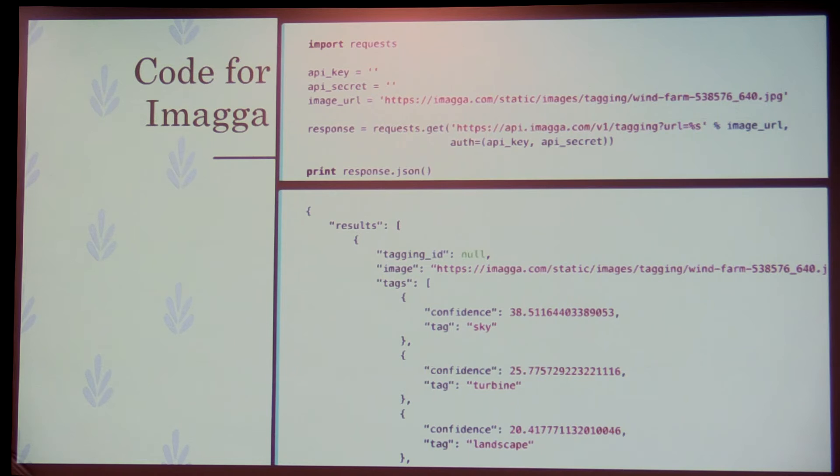The third API is very similar. These guys don't have a library as such — you use requests and just do requests.get, give it the picture. This is a different picture, and the labels returned are sky, turbine, and landscape, with probabilities around 38% and 20%.